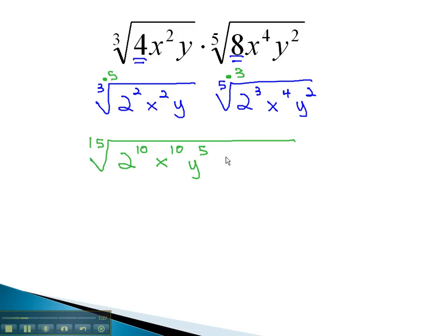Similarly, on the other radical, multiplying by 3, we have 2 to the 3 times 3, or 9. x to the 3 times 4, or 12. y to the 2 times 3, which is 6.